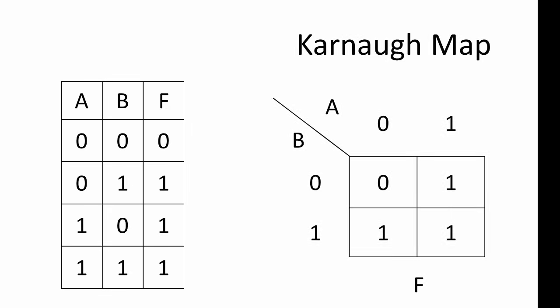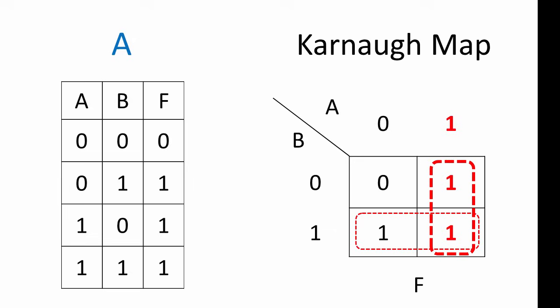Here's another example with two inputs — we've seen this one before. It's the truth table for an OR gate, but let's see how we can derive the Boolean expression by inspecting the K-map. Here's the corresponding K-map. A single group cannot be L-shaped, so what we have here are two overlapping groups of 1s. The ones in the vertical group always match the input value A, so the vertical grouping can therefore be expressed simply as A. Hence, this K-map represents the expression A or B. It is indeed the OR function.